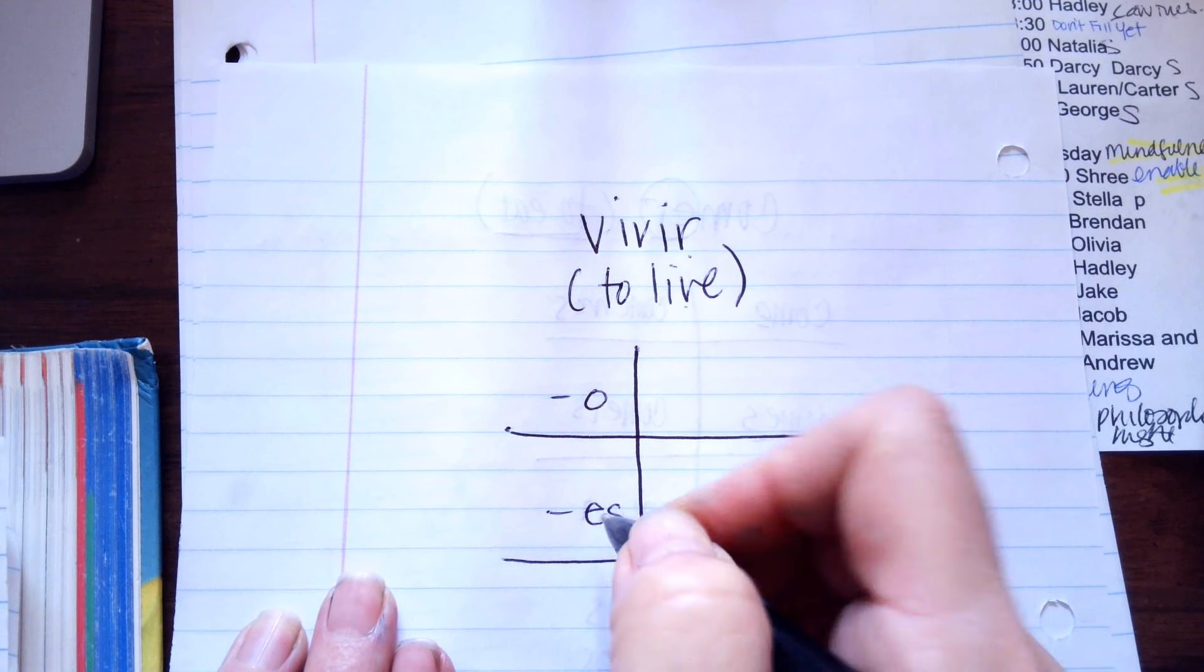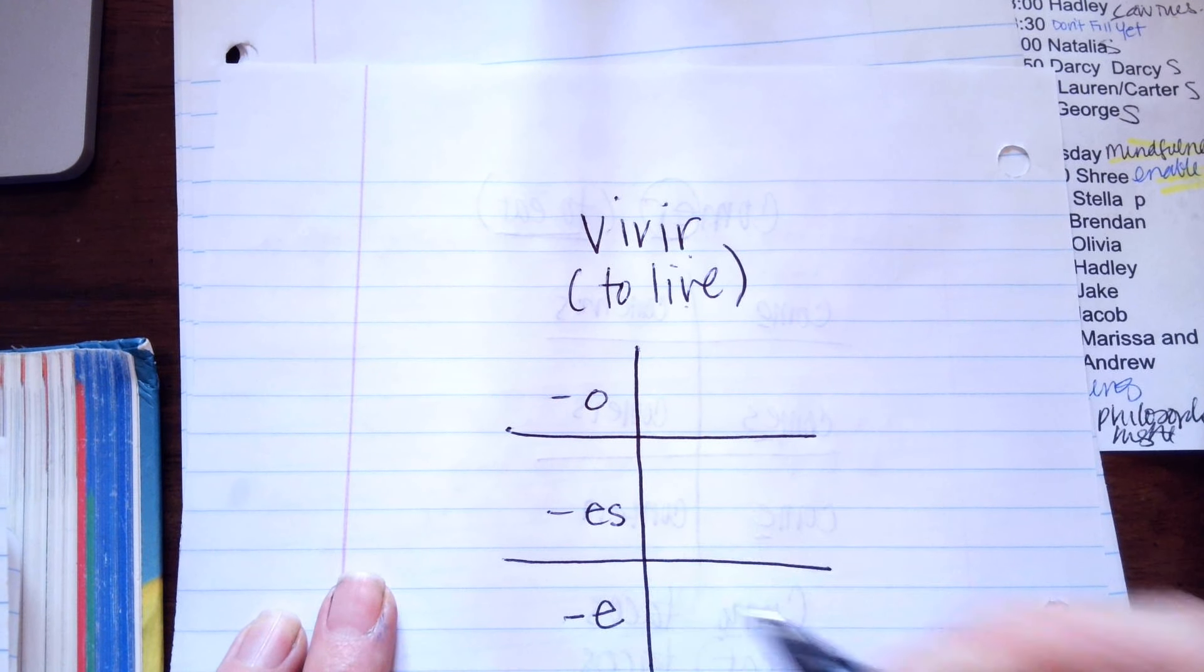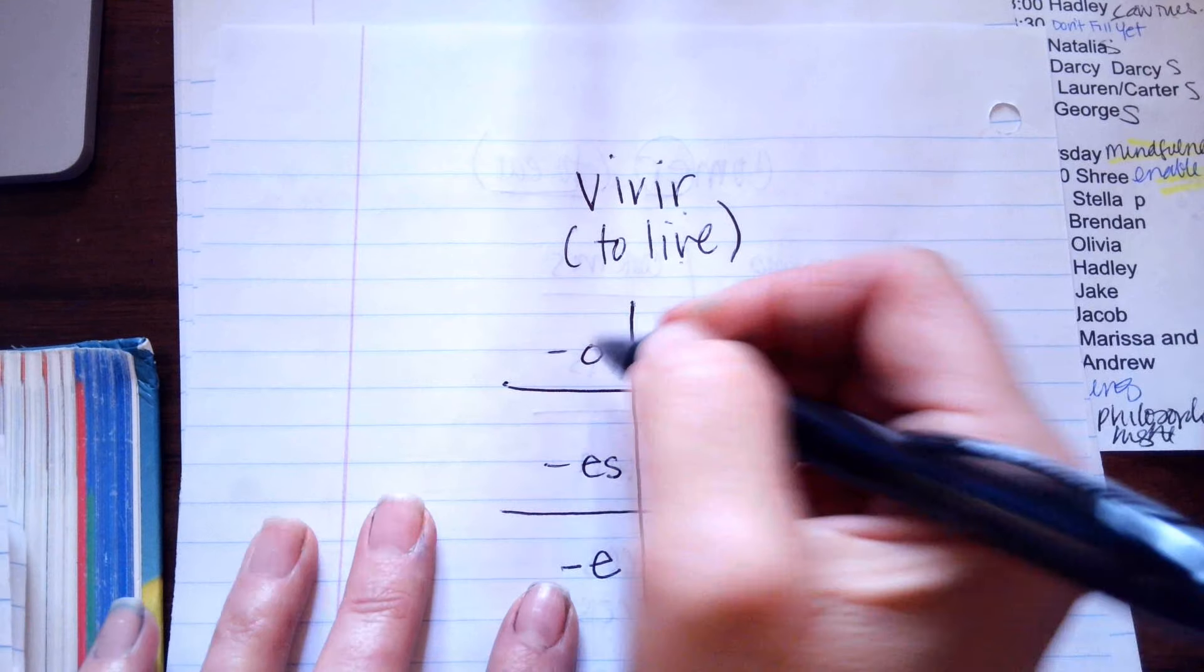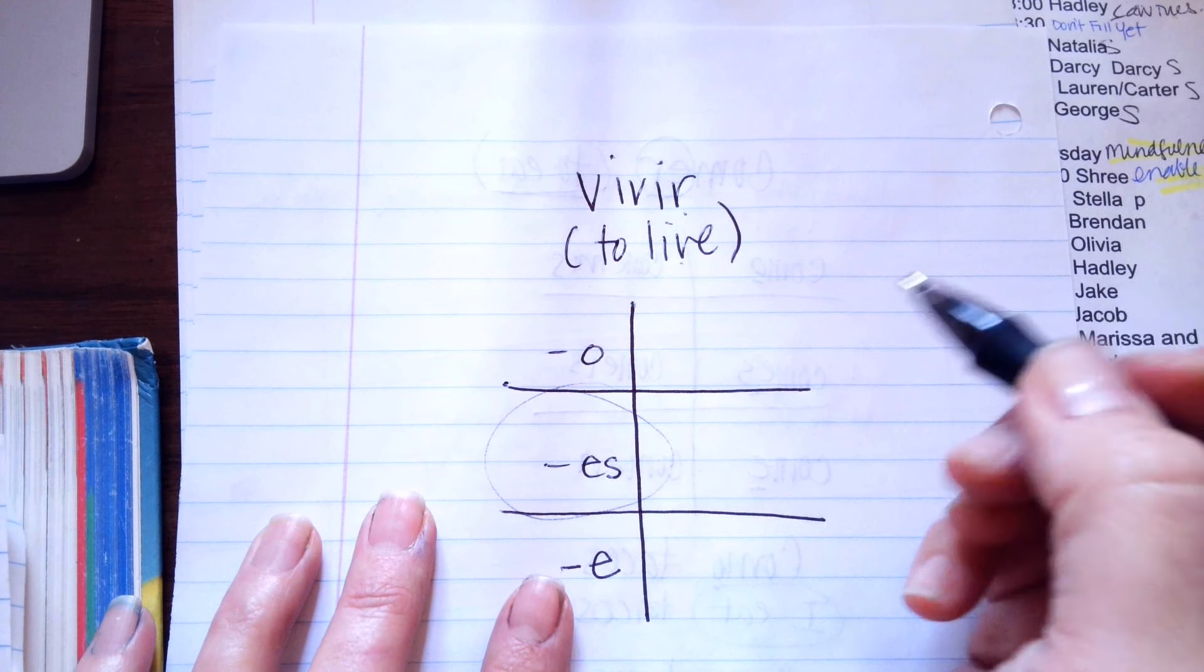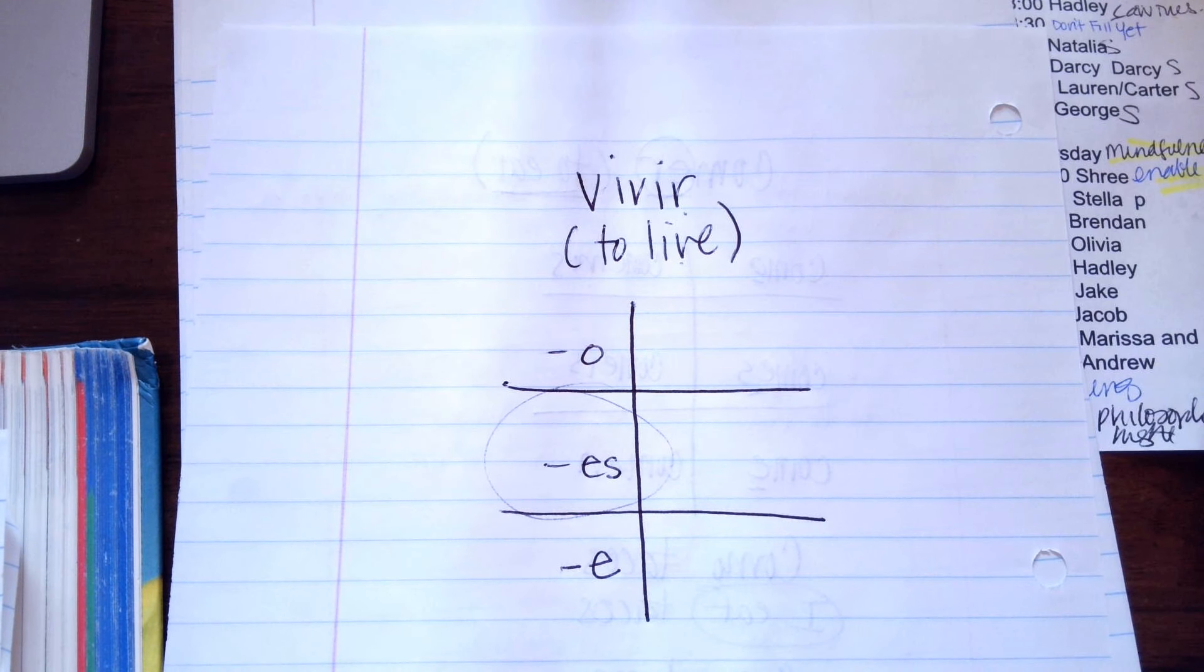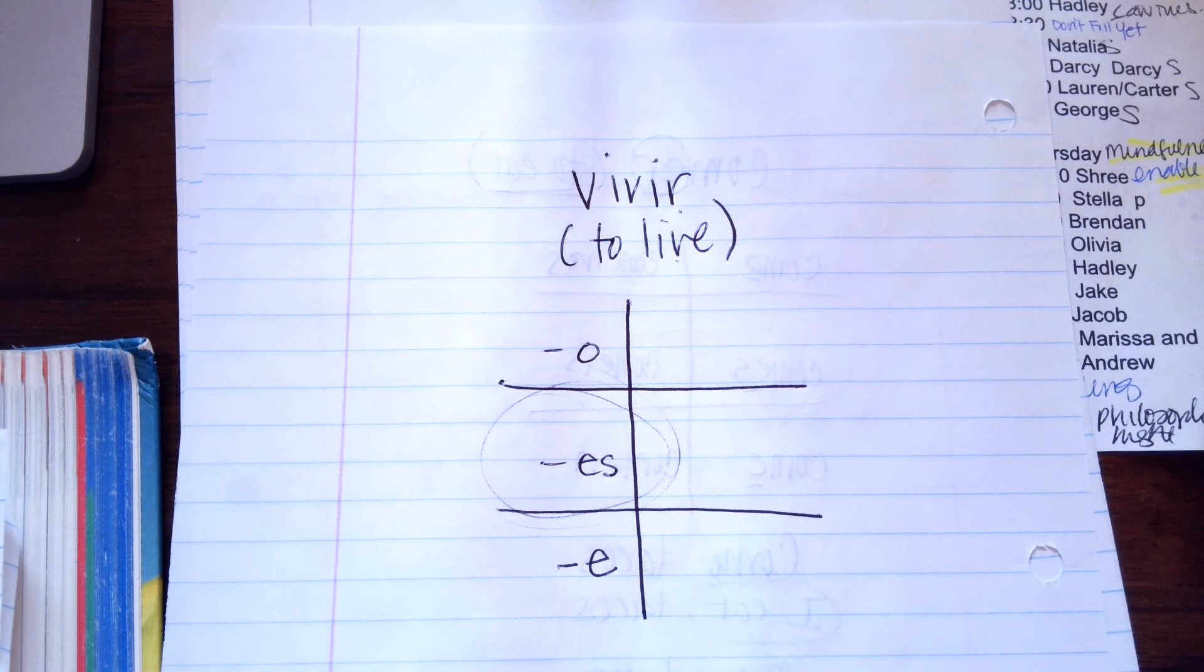You live, he, she, or you live. This is formal. So, if you're talking to your aunt, who is higher than you in the hierarchy, she's not your peer, she's not your friend, you use this. And that's a sign of respect.